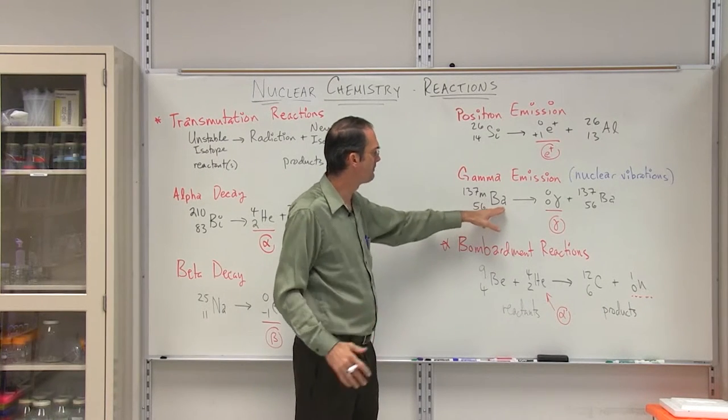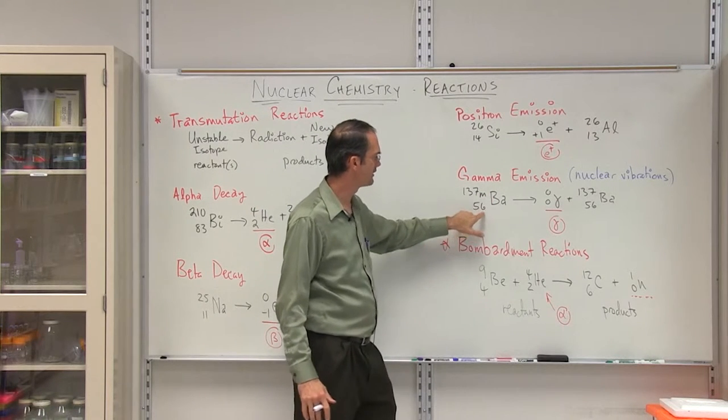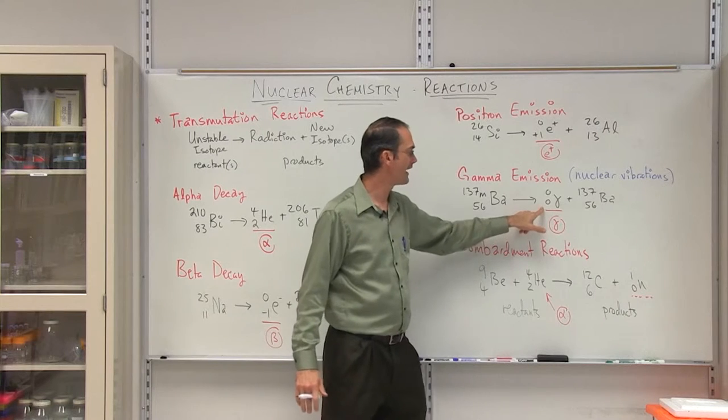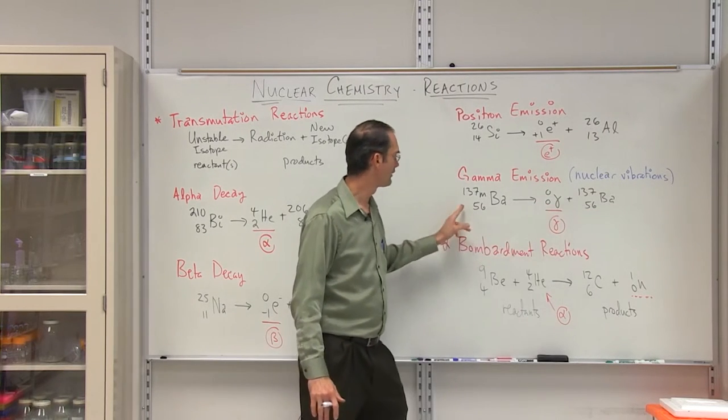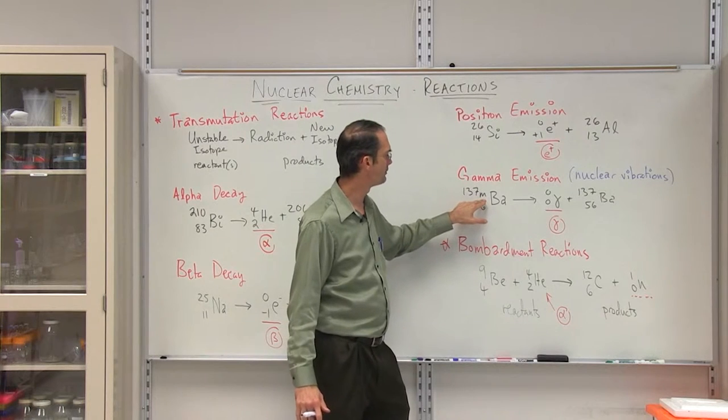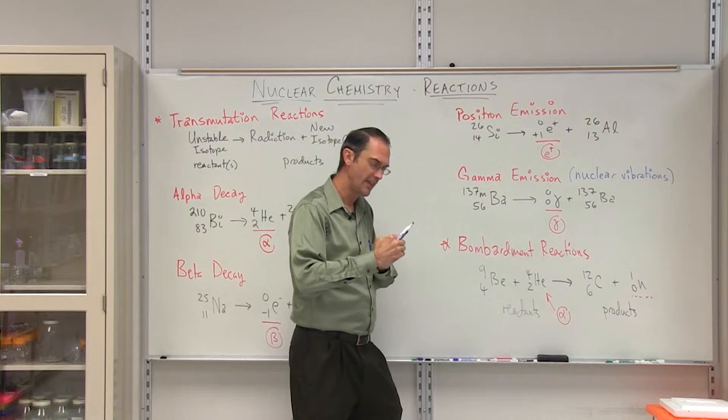So if you begin with barium, in this case, in M, what's called a metastable state, 56 protons barium, we're going to give up a gamma ray, which has no charge to it, we're going to end up with barium again. And over here, we go from a 137 metastable, which means that it's excited, and then it's going to lose that vibration energy.